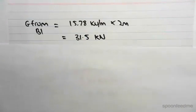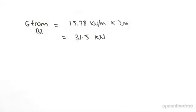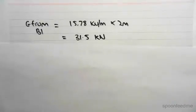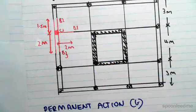For B1, we found the permanent action on B1 to be 5.78 kilonewtons per meter, and we're just going to multiply that by its length of 2 meters, which is going into C1.